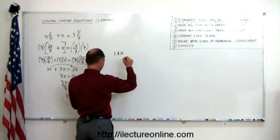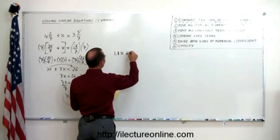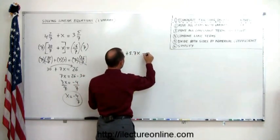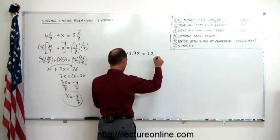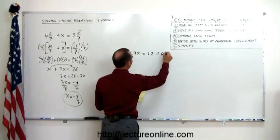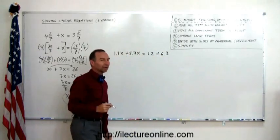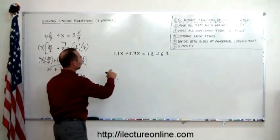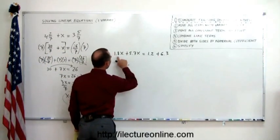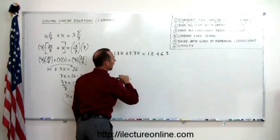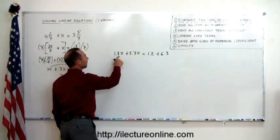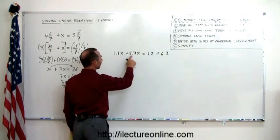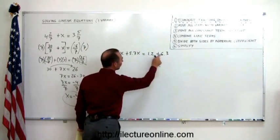1.8x plus 5.7x equals 1.2 plus 6.3. All right, clearly we have decimal places now, decimals. Notice that there's four terms, each have a decimal sign. And notice that they only have one decimal place after the decimal. So this is 1.8, 5.7, 1.2, and 6.3.